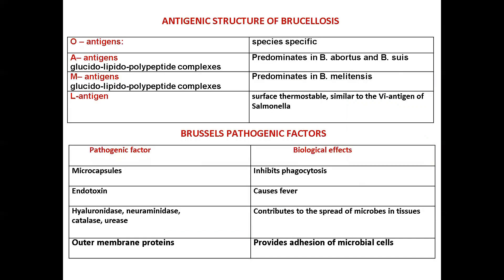The main antigens of Brucella are two somatic species-specific O antigens: A and M. M antigen dominates in Brucella melitensis, while A antigen predominates in Brucella abortus and Brucella suis. Brucella also has a surface thermostable L antigen similar to the Vi antigen of Salmonella.